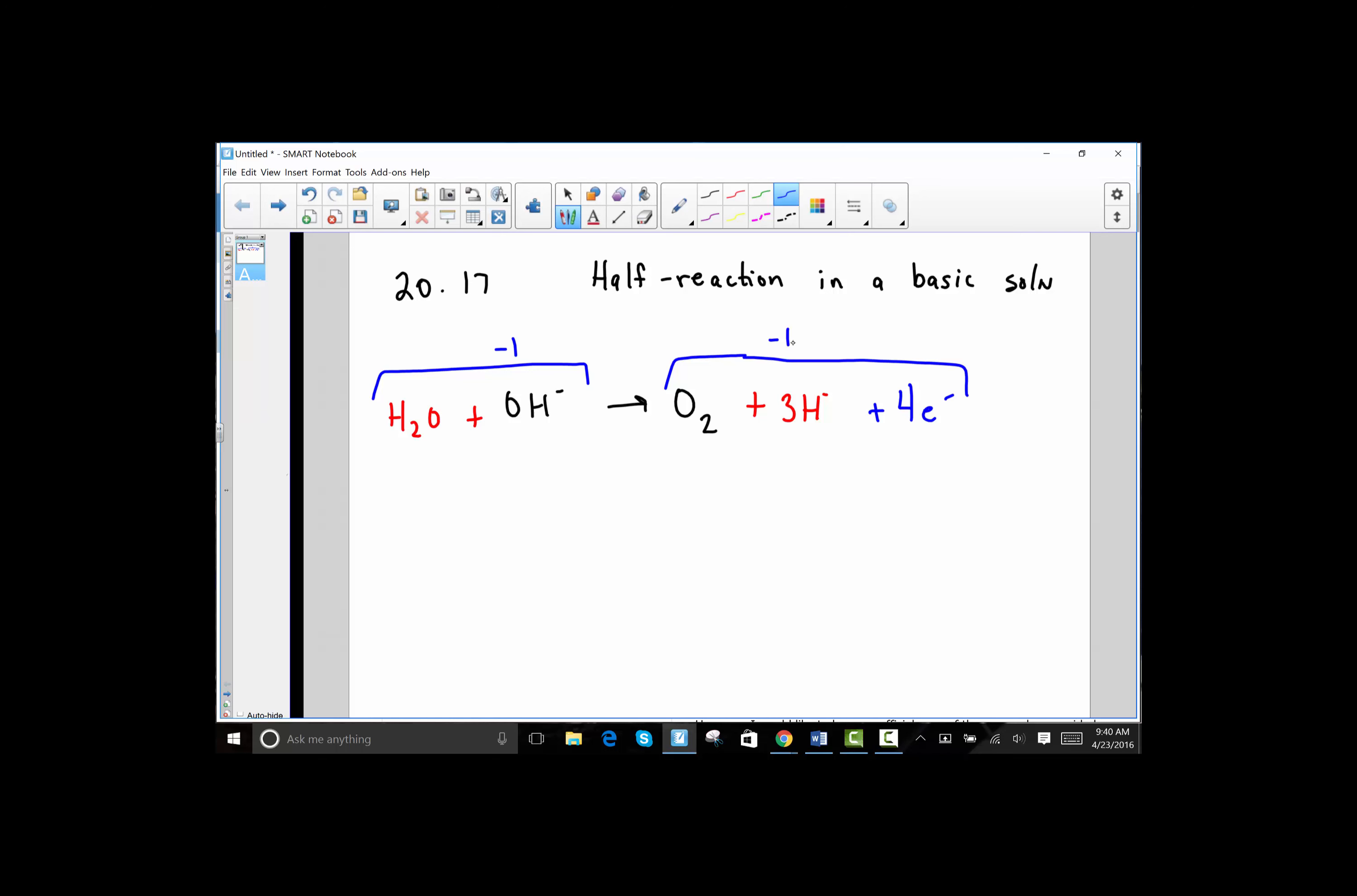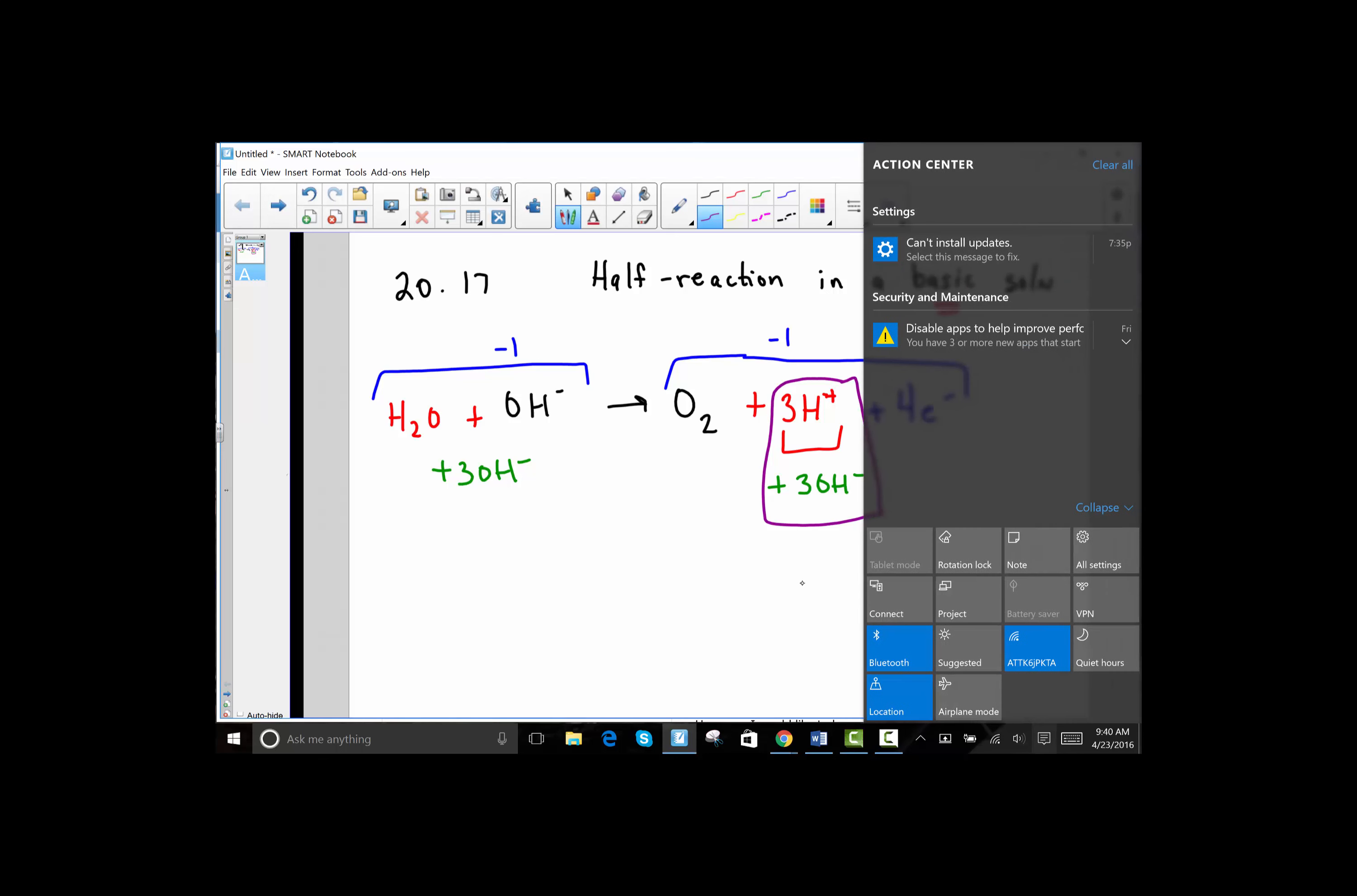Now, if this were an acidic solution, we would be done. But this is basic, which means we have to turn the number of protons on the right hand side that we added and neutralize those by adding the base ion to create neutral water. So since I have three protons on the right hand side, to both sides I am going to create three hydroxides so that overall, these three protons and three hydroxides form three water molecules.